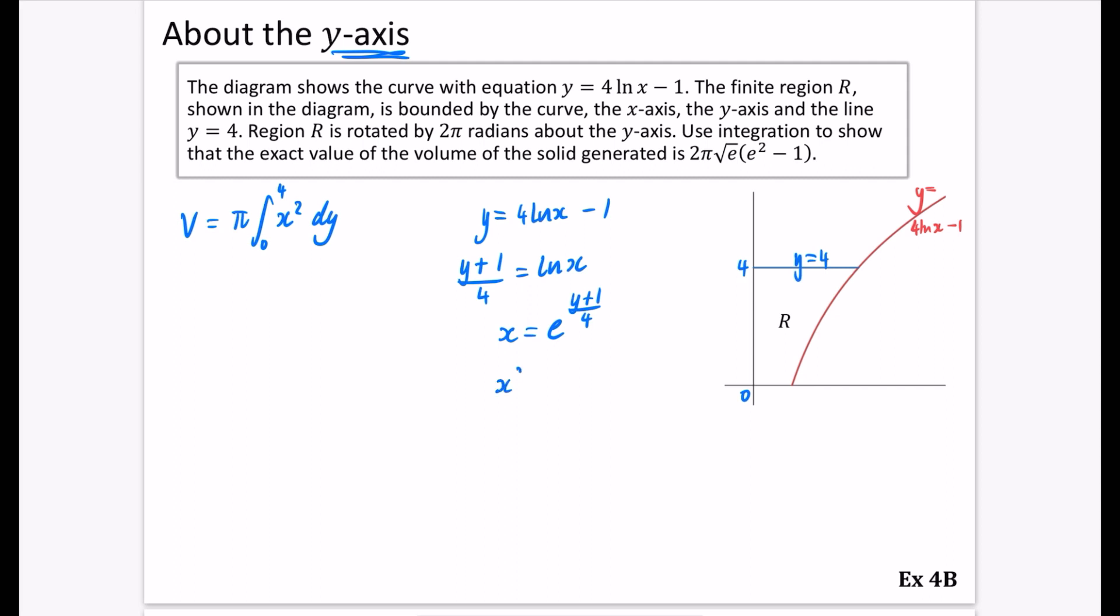And if I square this, that means I'm doing e to the y plus 1 over 4 all squared. Remember with indices, you're multiplying these things together. So x squared is simply going to be e to the power of y plus 1 over 2. Because we've got something as a quarter, and we're doubling it, it's just going to become a half.